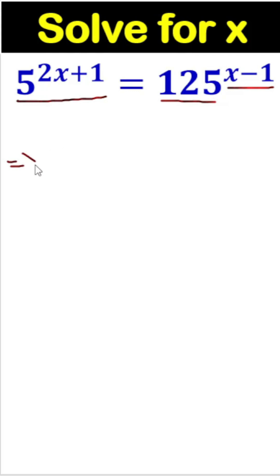Initially, we can write 5 to the power 2x plus 1, and this 125 we can write as 5 cube. What does this mean? It means 5 times 5 times 5. So 5 cube means 125, to the power x minus 1.